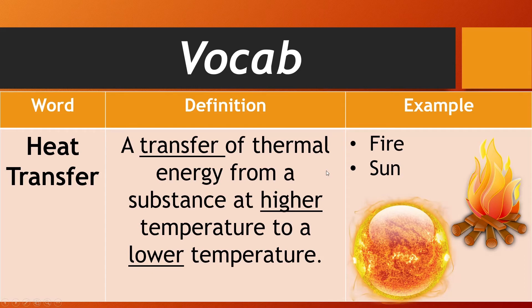Next we have heat transfer. The way heat transfers is from a substance at a higher temperature to a lower temperature, so hotter things try to send their heat out to things that are at a less hot state, or something that is colder. Heat travels from higher temperature to lower temperature. The Sun is very far away but it is much hotter than the Earth, so its heat travels towards the Earth to try to heat it up.